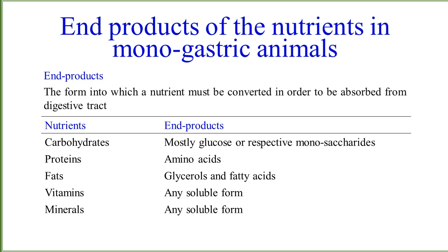Here is a list of the end products of nutrients in monogastric animals. The end product is the form into which a nutrient must be converted in order to be absorbed from the digestive tract. The nutrients include carbohydrates, proteins, fats, vitamins, and minerals. After complete digestion of carbohydrates, mostly glucose or respective monosaccharides will form. Proteins will convert into amino acids, and fats will convert into glycerol and fatty acids.